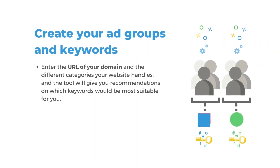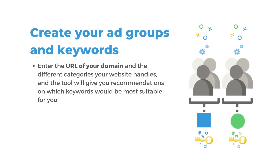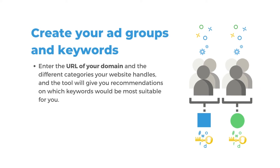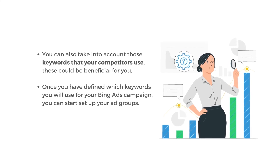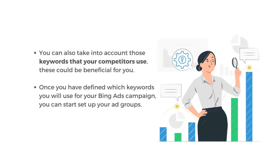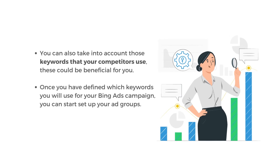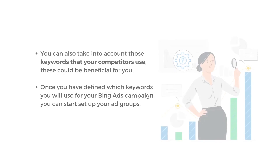Create your ad groups and keywords. Introduce the URL of your domain and the different categories your website handles. The tool will give a recommendation on which keywords will be most suitable for you. You can also take into account those keywords that you have previously used — this will be beneficial for you. Once you have defined which keywords you will use for your Bing Ads campaign, you can set up your ad groups.